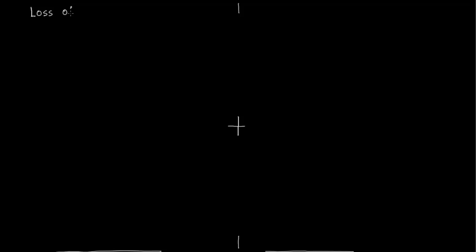On this slide we talk about loss of exactness of sheaves when you pass from small sets to the entire space, and then we will continue and talk about flabby sheaves and flabby resolutions of these sheaves. We start by fixing an open set U of the entire space X, and we consider a short exact sequence of sheaves.